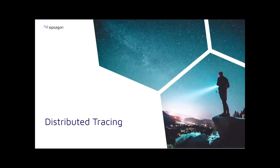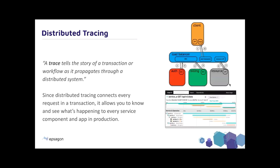This brings us to distributed tracing — really a more modern application performance monitoring (APM) solution. Distributed tracing was actually born out of Google over a decade ago. It allows engineers to trace the specific path a request makes through services. In effect, it helps shine a light on that needle in the haystack that logging or metrics alone can miss, since just because your application is made up of 15,000 services doesn't mean a request is going to travel through every single one of them.